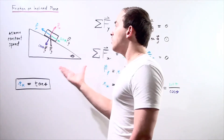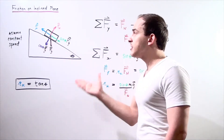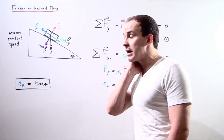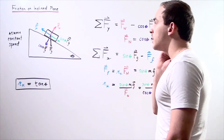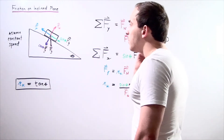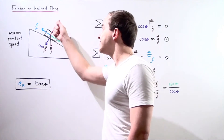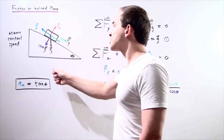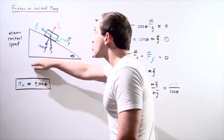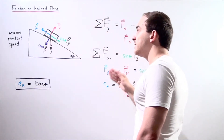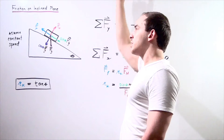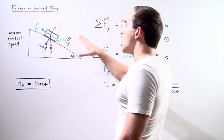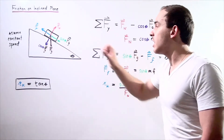Now let's label all the forces and create the free body diagram for our moving box traveling down the inclined plane. We begin by labeling the force of gravity, which pulls downward on the object — the force of gravity acts perpendicular to the ground. The normal force acts perpendicular and points upward along the y-axis, running perpendicular to the surface of our inclined plane.